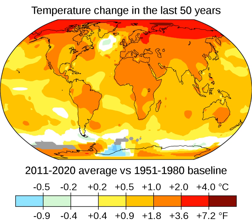As air gets warmer, it can hold more moisture. After initial warming due to emissions of greenhouse gases, the atmosphere will hold more water. Water vapour is a potent greenhouse gas, so this further heats the atmosphere. If cloud cover increases, more sunlight will be reflected back into space, cooling the planet. If clouds become higher and thinner, they act as an insulator, reflecting heat from below back downwards and warming the planet. Overall, the net cloud feedback over the industrial era has probably exacerbated temperature rise.